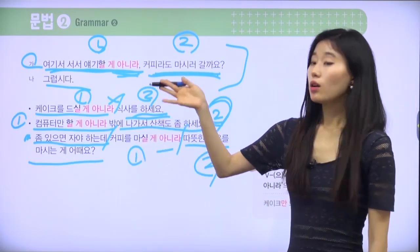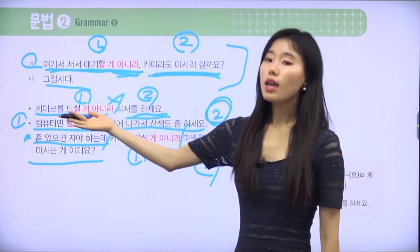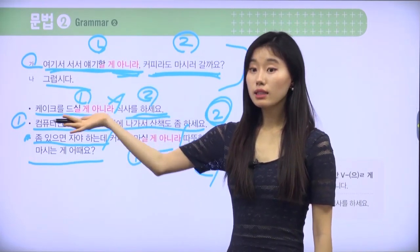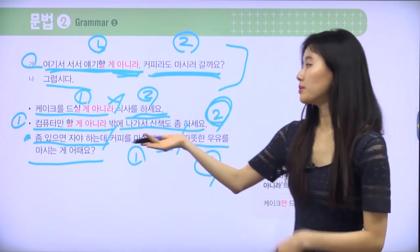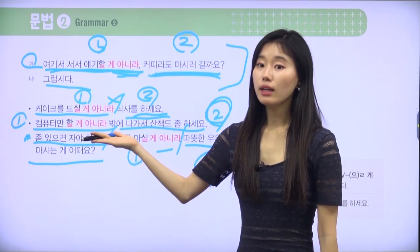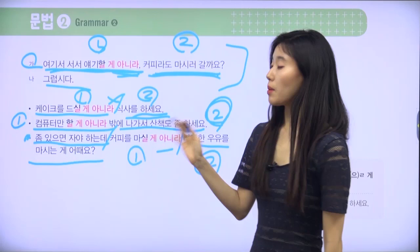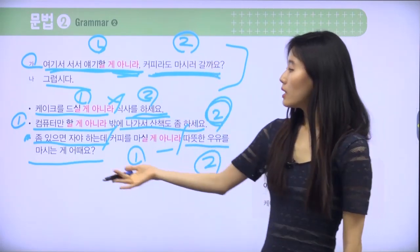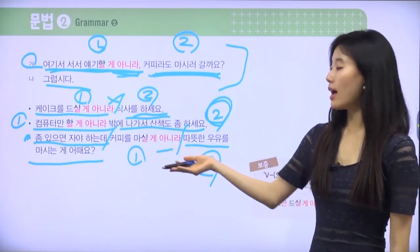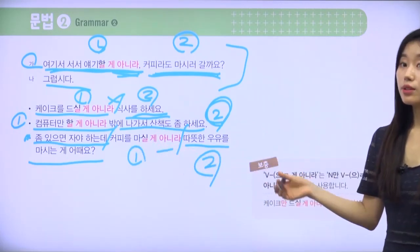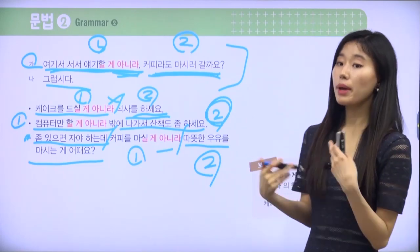So summarizing the pattern: 서서 얘기할 게 아니라 카페 가서 이야기해요. 케이크를 드실 게 아니라 지금 식사하셔야 돼요. 컴퓨터만 할 게 아니라 산책도 하세요. 커피를 마실 게 아니라 우유를 마시는 게 어때요? Always remember: the second option — the one following 을 게 아니라 — is the better suggestion.